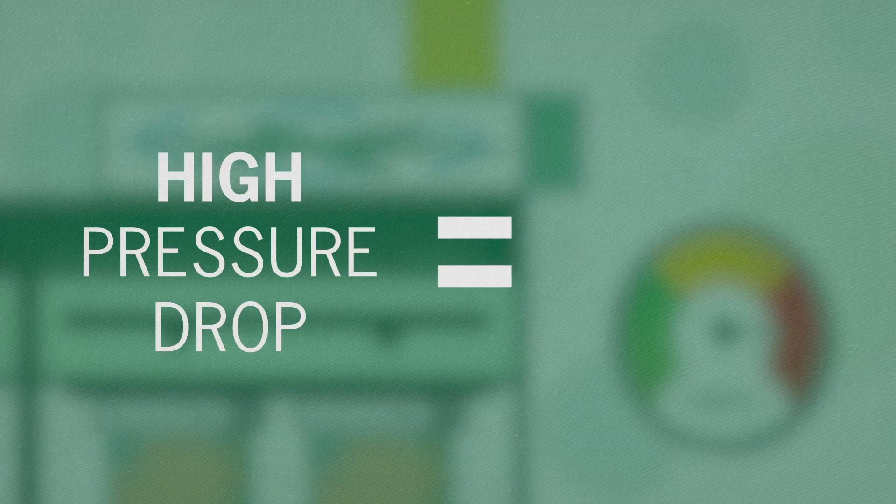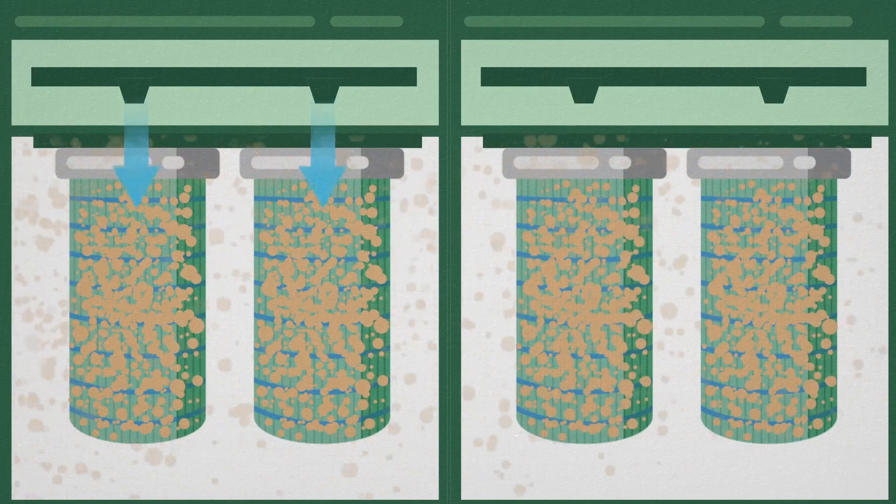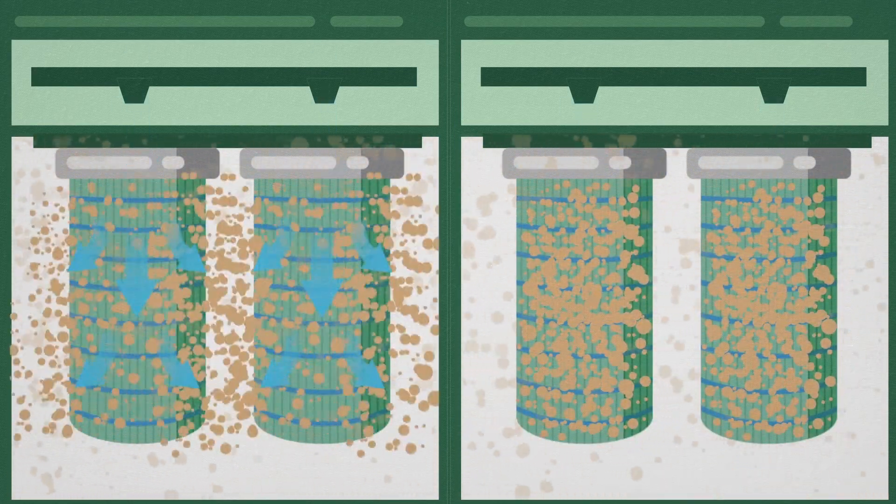So high pressure drop equals high energy usage. To help alleviate this problem, dust collectors use a method called reverse pulse cleaning to continually blow off the dust that builds up on the filters.